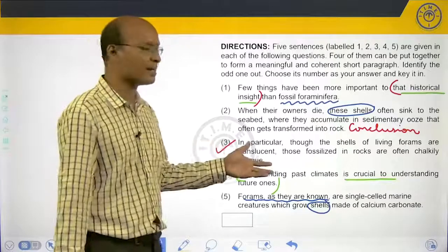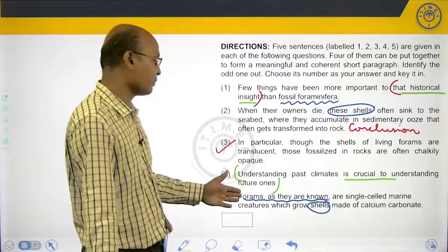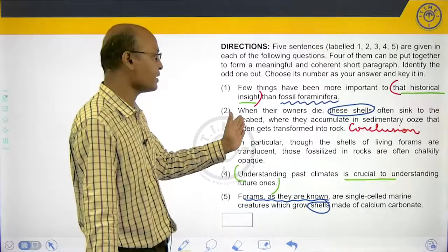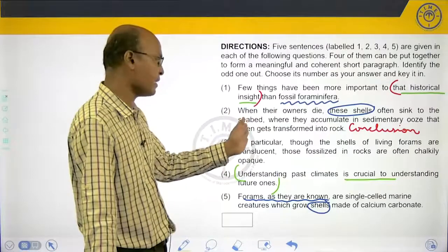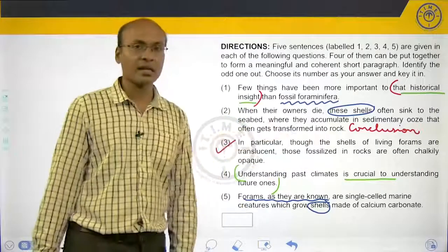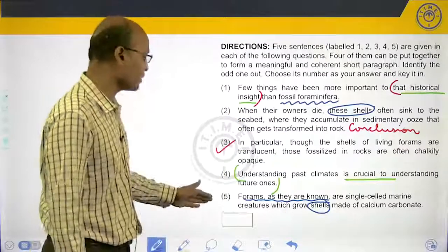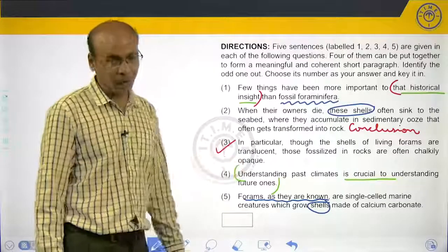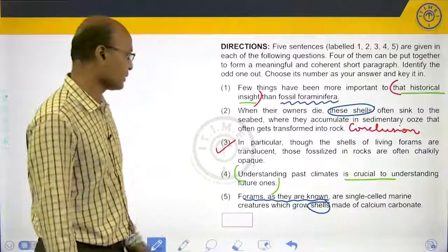After five we'll have five and two forming another mandatory pair because it goes on to tell us what happens to the state of the shells. They grow shells, the shells sink to the seabed, they accumulate in sedimentary ooze that then gets transformed into rock. So the paragraph neatly flows as four, one, five, two, three.